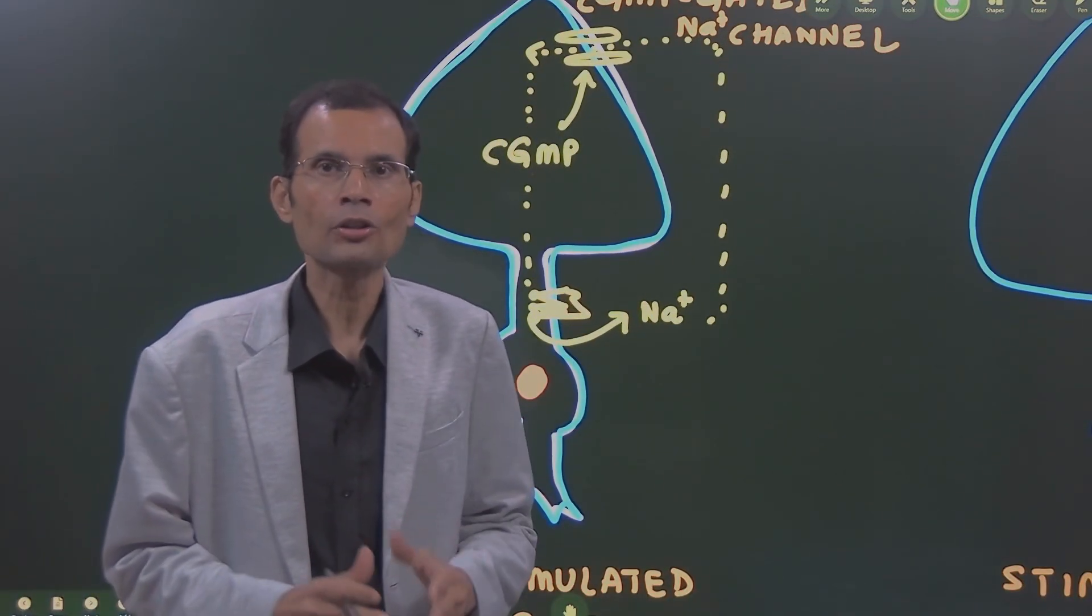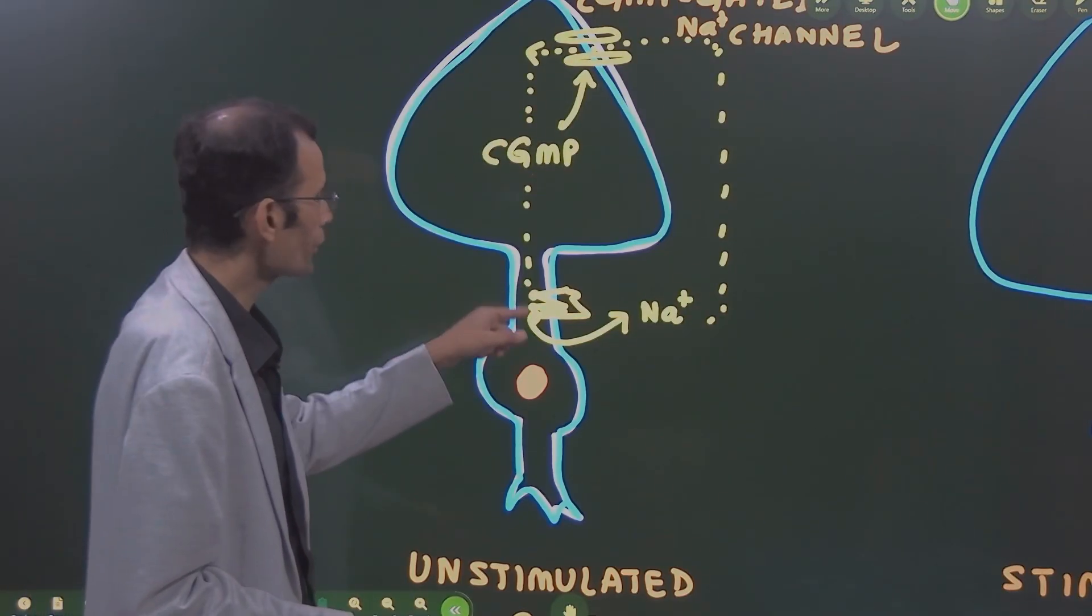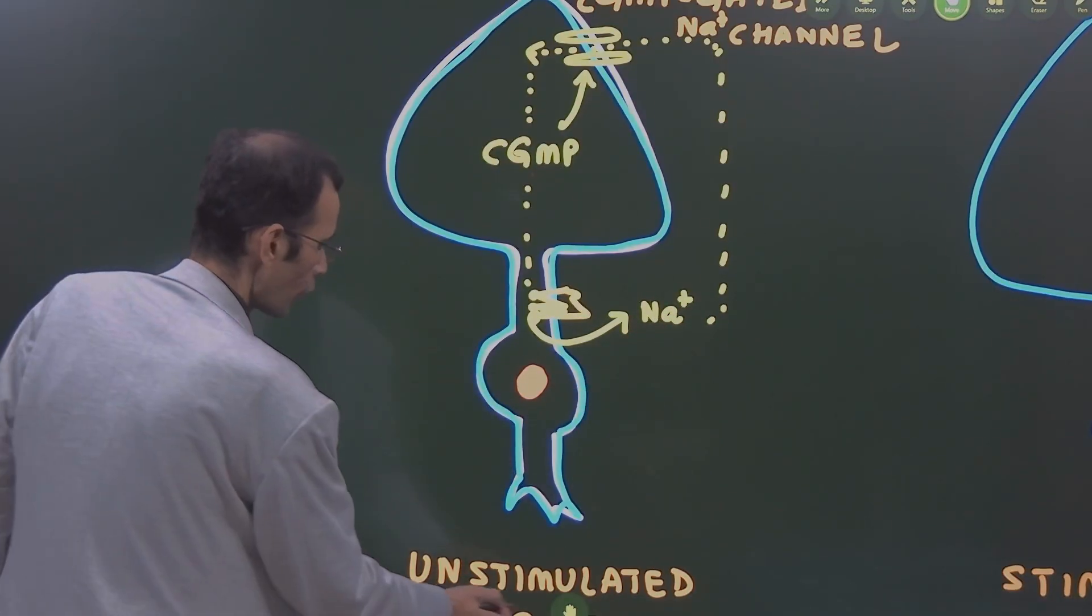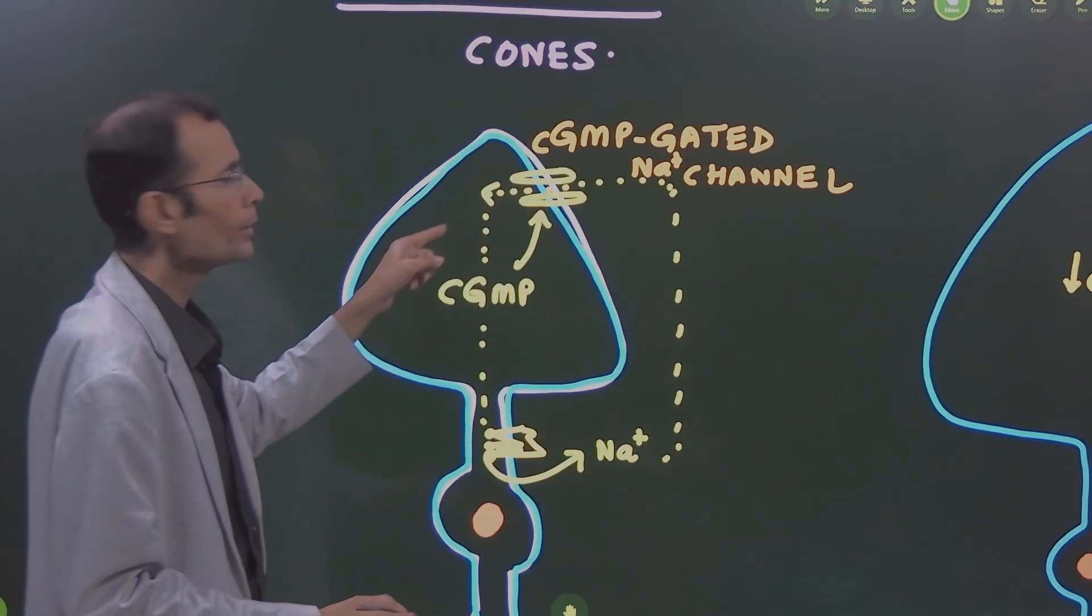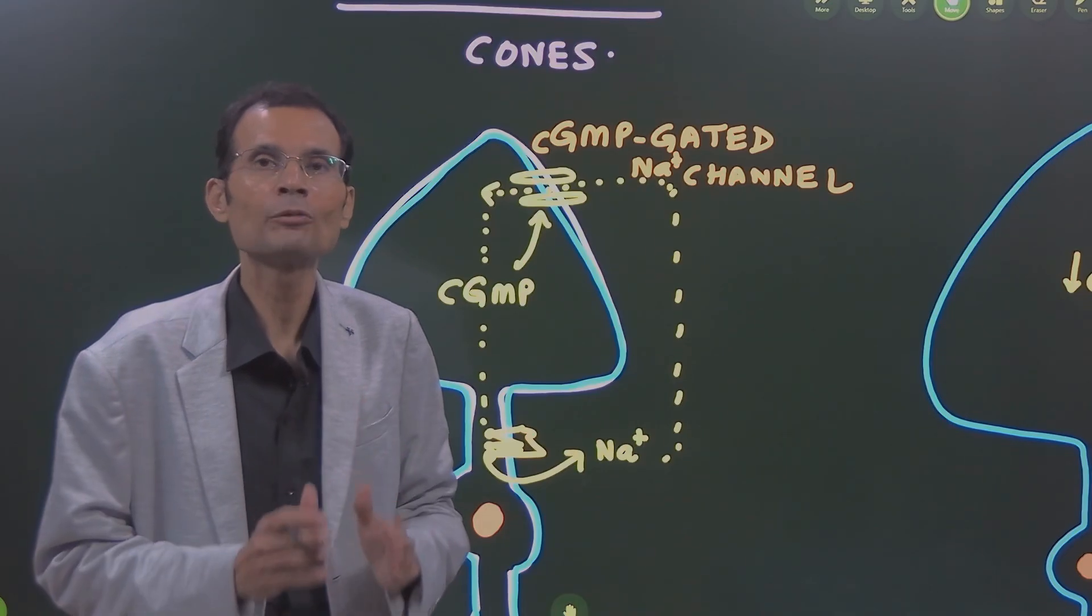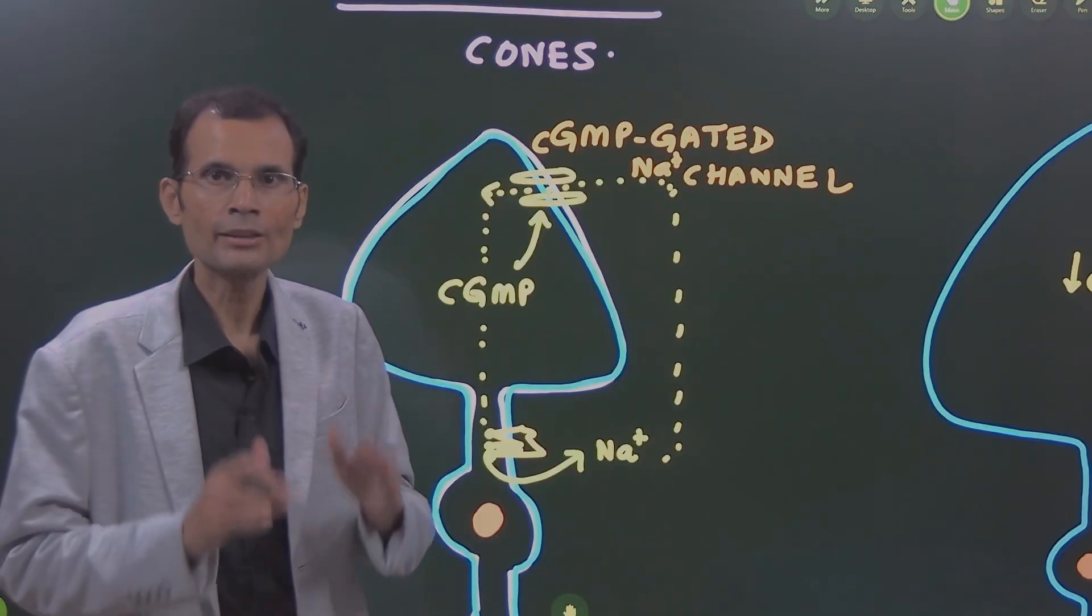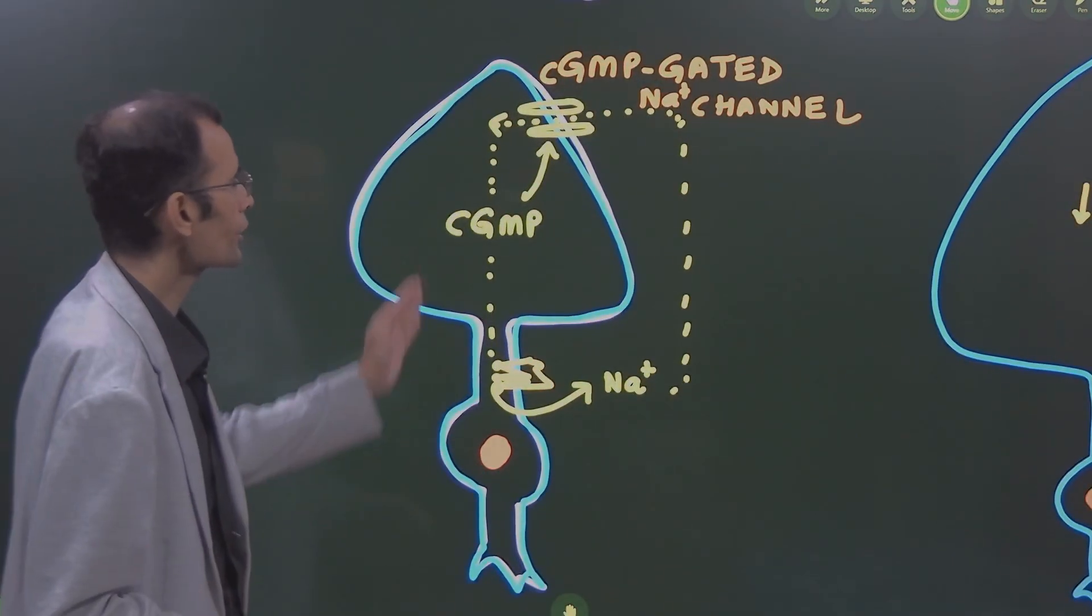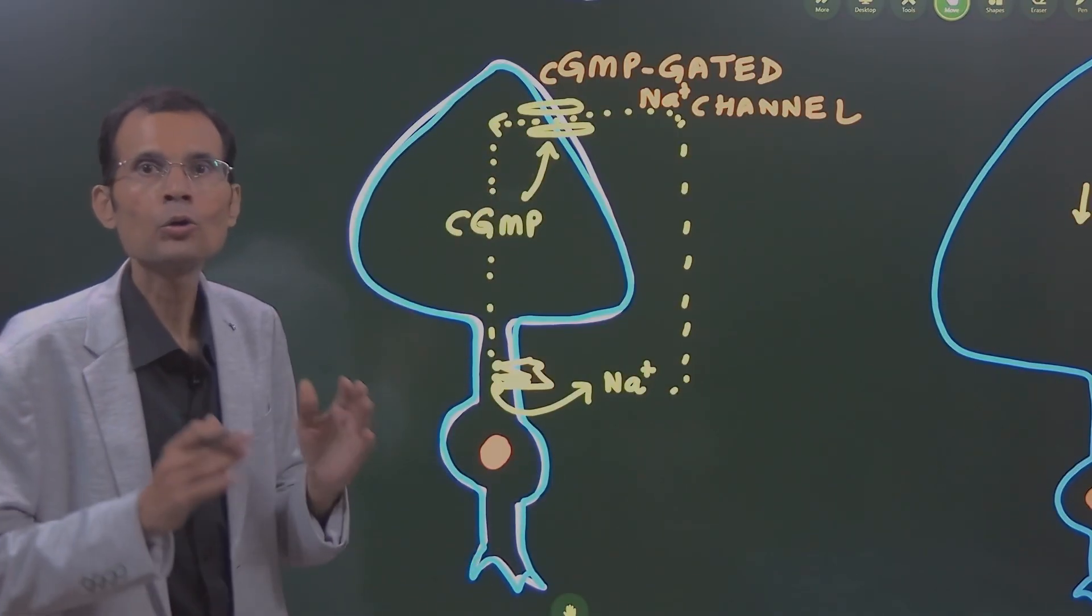When light is not striking the rod or cone, from the inner segment where there is a sodium-potassium pump, sodium is thrown out of the cone, and then from the outer segment this sodium comes back. There is a sodium current or sodium cycle going on when the cone is unstimulated. Cyclic GMP levels inside the cone keep this channel open.